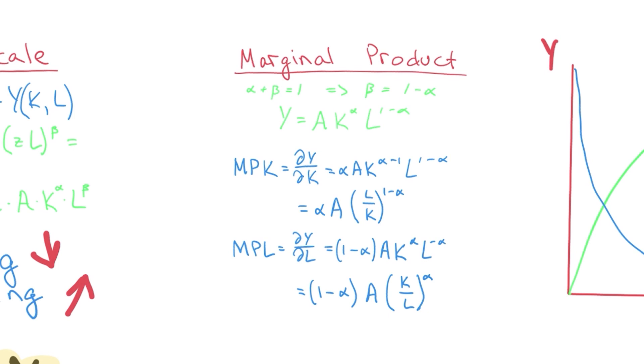Here let's assume that we have constant returns to scale so alpha plus beta equals 1, therefore beta is 1 minus alpha and then we can rewrite the whole function like this where Y equals A times K to the alpha times L to the 1 minus alpha. And what are the marginal products? There's two of them. Marginal product of capital and marginal product of labor. And it pretty much means that if we increase the input by one unit how much will we increase the output? And it's defined as the partial derivative with respect to capital and labor. And after derivation we have our two marginal products here.